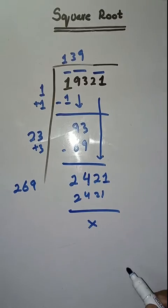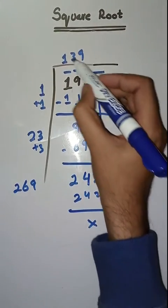So this is how we have to solve. So square root of 19,321 is 139.